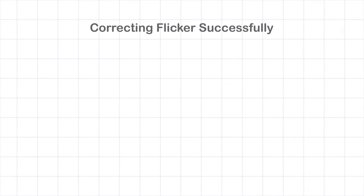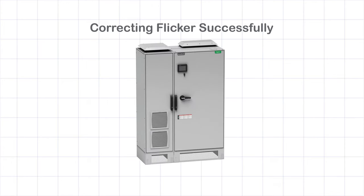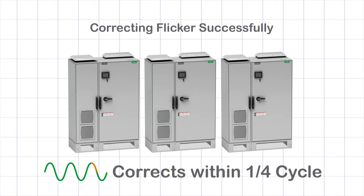To be successful at correcting flicker, you must inject the right amount of reactive power within one electrical cycle. This makes the AccuSign ideal for the job because it's scalable. You install the number of units you need in parallel. And it can inject KVAR within one quarter of a cycle, 4 to 5 milliseconds.